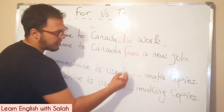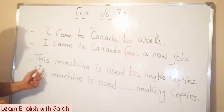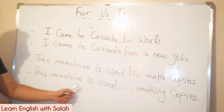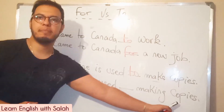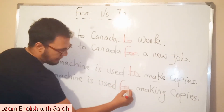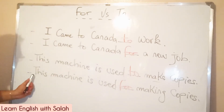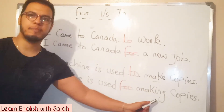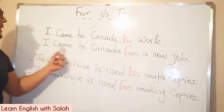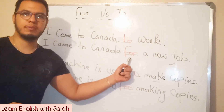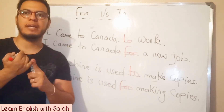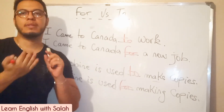'This machine is used __ make copies' — we have a verb here, so: this machine is used to make copies. 'This machine is used __ making copies' — we have a gerund here, so: this machine is used for making copies. So 'to' goes before a verb and 'for' goes before a noun or a gerund.